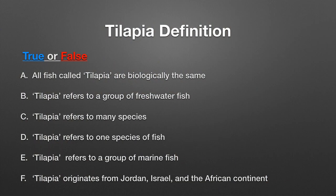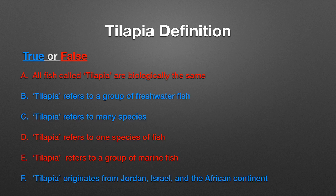True or false: all fish called tilapia are biologically the same; tilapia refers to a group of freshwater fish; tilapia refers to many species; tilapia refers to one species of fish; tilapia refers to a group of marine fish; tilapia originate from Jordan, Israel, and the African continent. Three statements were false: tilapia are biologically the same is false, tilapia refers to one species is false, and tilapia refers to a group of marine fish is false.